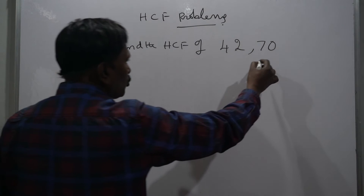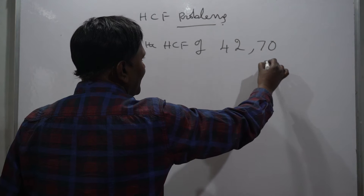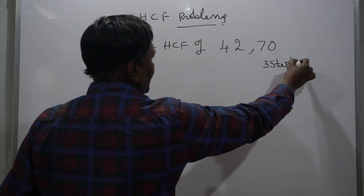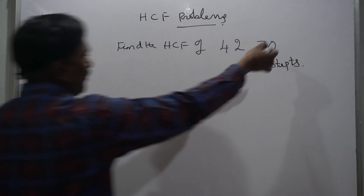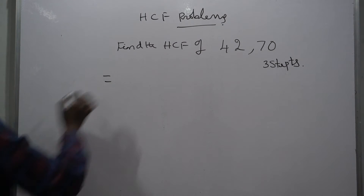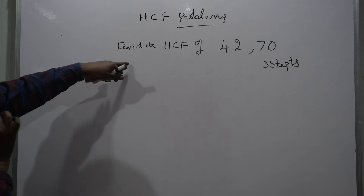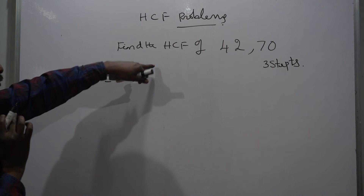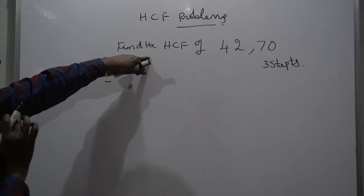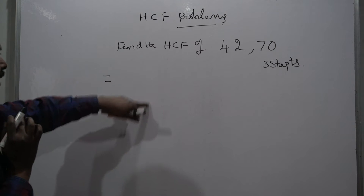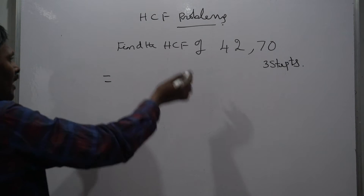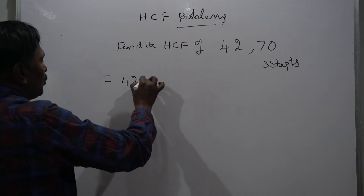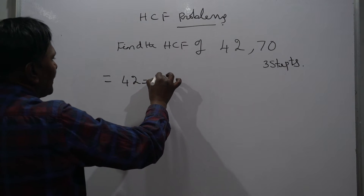As we have explained earlier, we have to follow three steps. First, we have to find the product of the prime factors, then we have to take the common prime factors, and then multiply those prime factors.